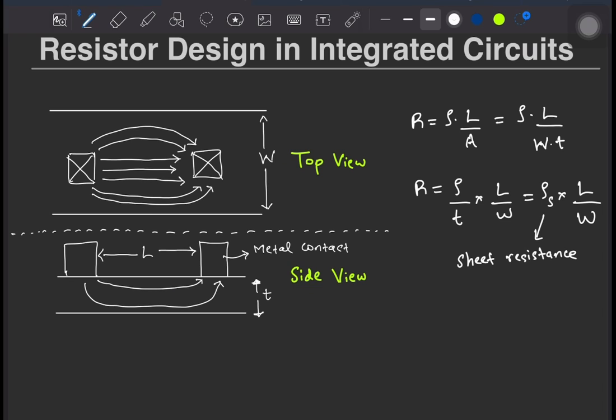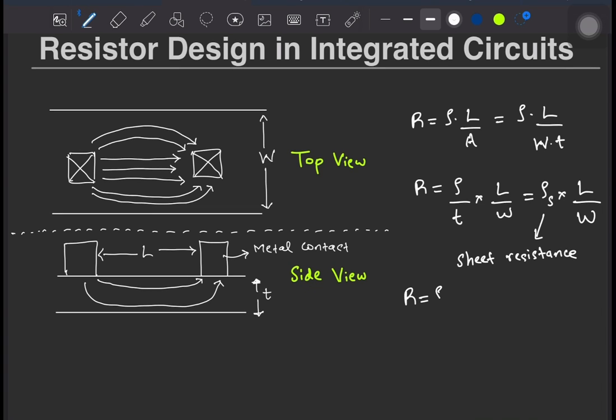Technically, its dimensions is ohms, but it is commonly described as ohms per square. This is so because the resistance R equals rho s if L equals to W, meaning that if you have a square resistor.